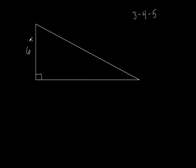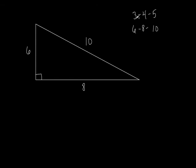What if I had sides of six and ten — what would the missing side be? It'd be eight. How? Look at what goes into six and ten: two. Two goes into six three times, two goes into ten five times. So it's a three-four-five triangle scaled by two, making it six-eight-ten. I could multiply by three to get nine-twelve-fifteen, and so on. All of these special triangles boil down to the three-four-five triangle.